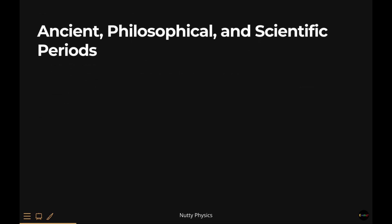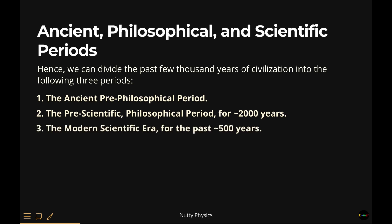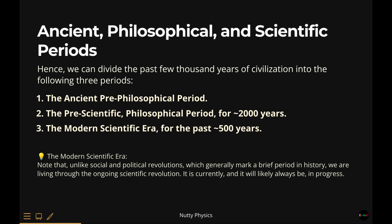Ancient, Philosophical, and Scientific Periods. Hence, we can divide the past 10 or 20 millennia into three periods: ancient, philosophical, and scientific periods. The Ancient Pre-Philosophical Period. The Pre-Scientific, Philosophical Period, for about 2,000 years. The Modern Scientific Era, for the most recent past 500 years or so, since the time of Copernicus and Galileo.